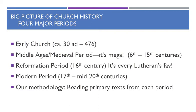History is a lot messier than this, but historians like to make order out of events. And so it's pretty standard to divide all of Christian history into these four major periods. The early church beginning with around the year 30 AD — that would mark the death and resurrection of Christ and therefore the beginning of the Christian church — through the year 478. The next period is referred to either as the Middle Ages or the medieval period, and it is mega in length.